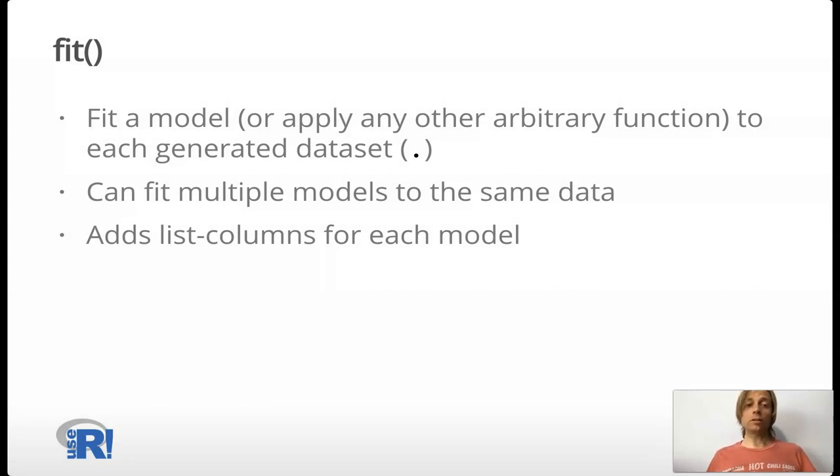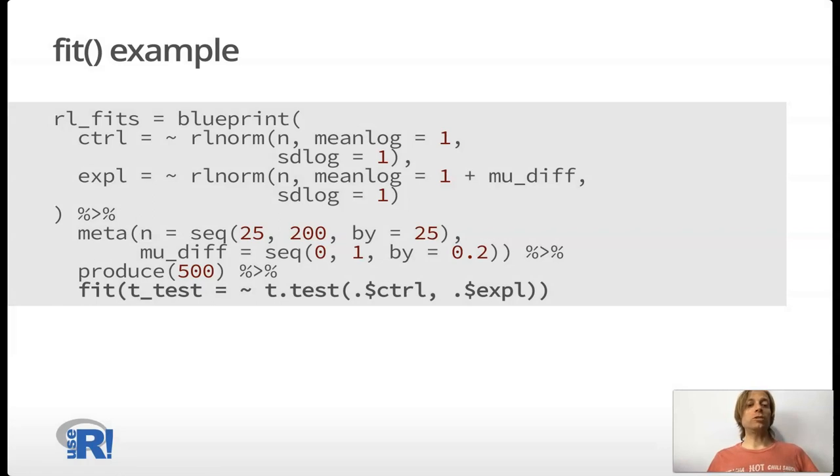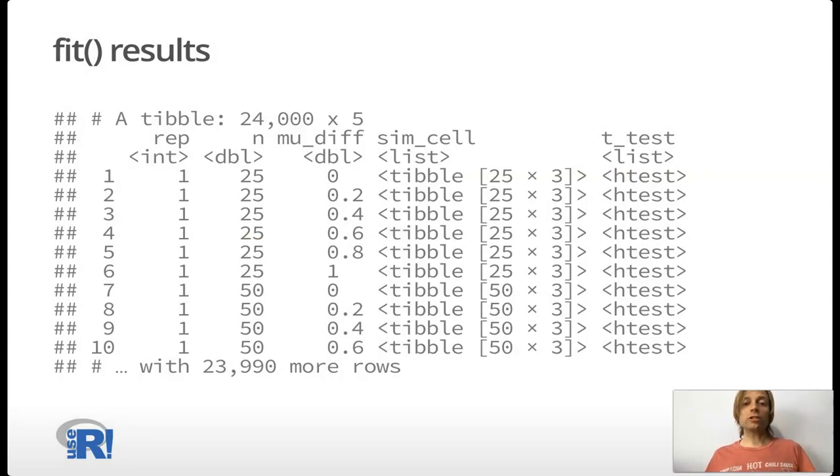After that, we can actually fit the model or apply any other arbitrary R function to each generated data set. And we refer to that generated data set using per syntax, which we can see in the example. We can fit multiple models to the same data. What this does is it adds list columns for each model. Again, we use the per formula function syntax. t underscore test equals tilde t dot test. And then we refer to the columns from the current data set using dot dollar sign. But we could also for some functions just use data equals dot, for instance, for lm. This just adds another column onto our data set. That last column there is t underscore test, and everything else is the same as the results of the produce function.